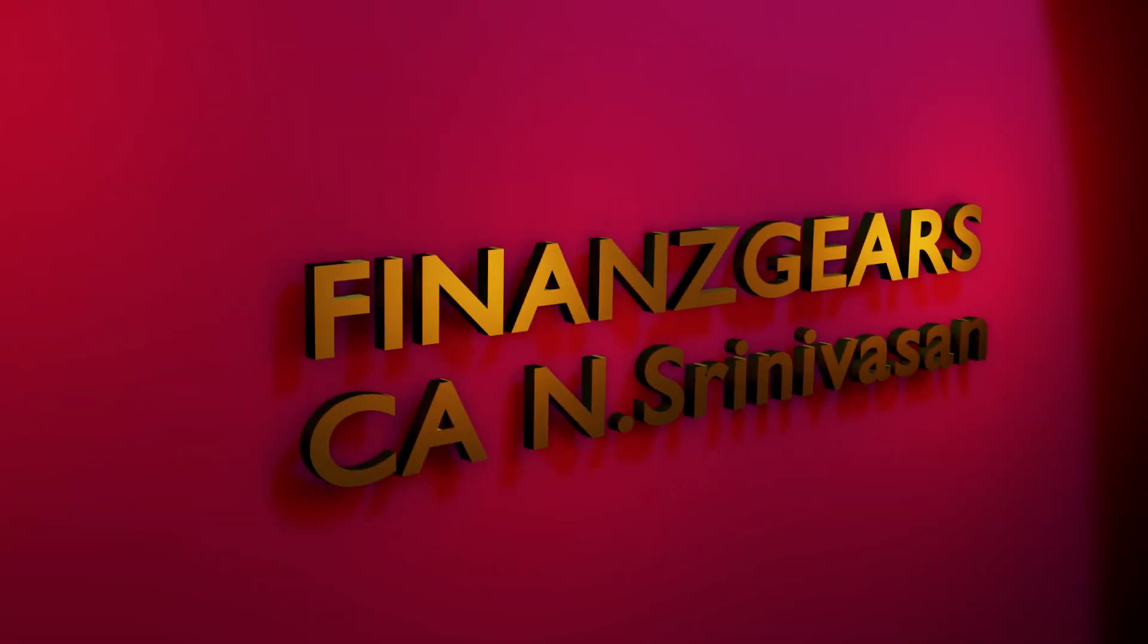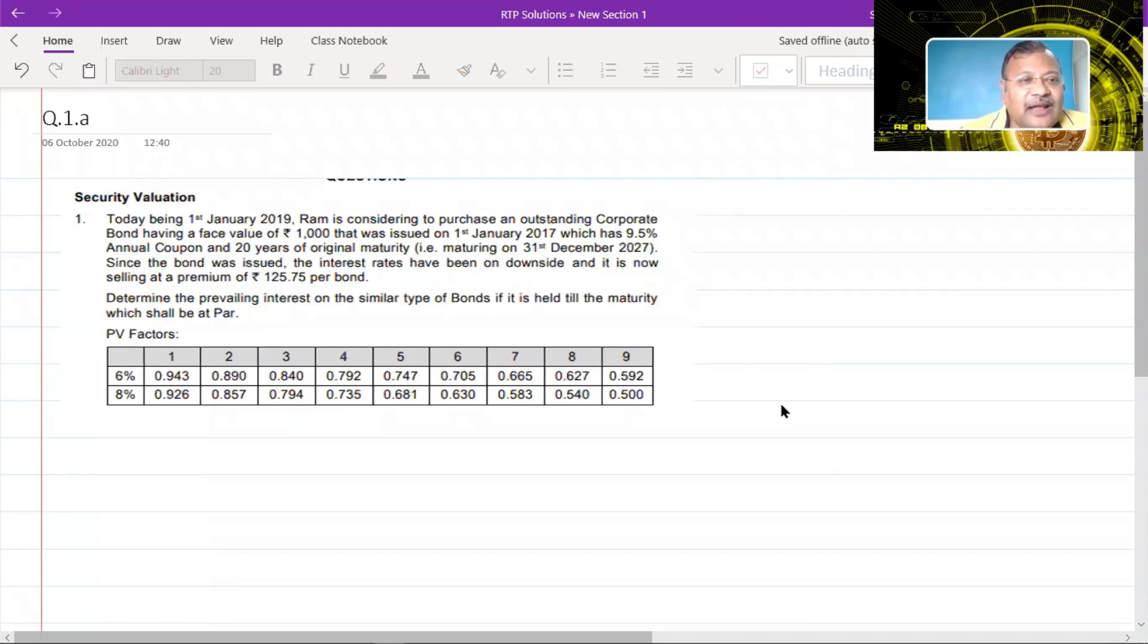So without further delay, let's begin. Okay, now let's look at this problem. It says today being 1st January 2019, Ram is considering to purchase an outstanding corporate bond having a face value of 1000 that was issued on 1st January 2017 which has a 9.5% annual coupon and 20 years of original maturity that is maturing on 31st December 2017. Now students, there is something wrong in this question.